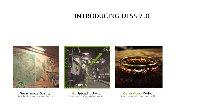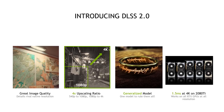Third, DLSS 2.0 is a fully generalized model. When integrating DLSS into new games, we don't have to go through the labor-intensive process of collecting new training data and training a custom model for each game. We now maintain one best DLSS model applied to every new game. This makes integration much easier than before. Lastly, we've also tremendously improved inference speed — the algorithm now runs about 1.5 milliseconds at 4K on a 2080 Ti. Combined with 4x pixel scaling, the performance increase from DLSS is really huge.